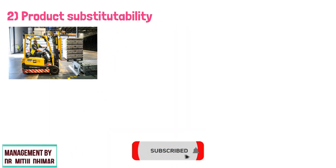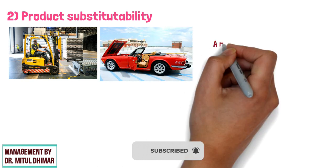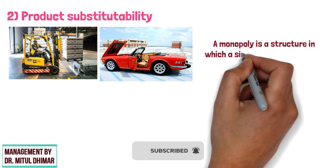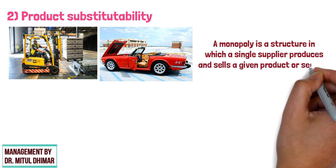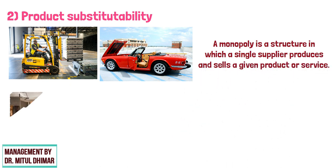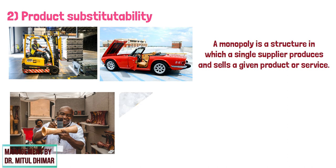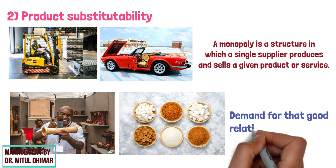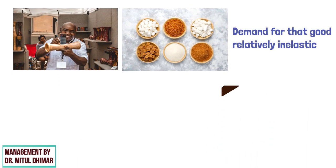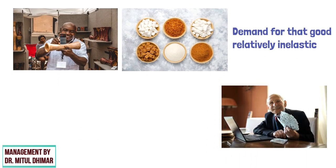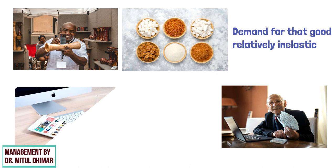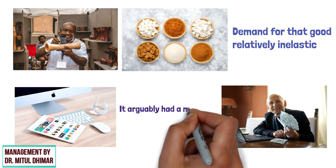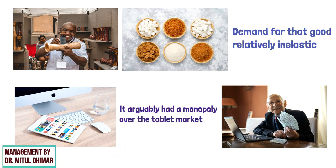Product Substitutability: one firm produces a good without close substitutes, and the product is often unique. A monopoly is a structure in which a single supplier produces and sells a given product or service. A monopoly sells a good for which there is no close substitute. The absence of substitutes makes the demand for that good relatively inelastic, enabling monopolies to extract positive profits. For example, when Apple started producing the iPad, it arguably had a monopoly over the tablet market.